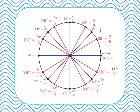Continuing in 30-degree steps: 7π/6, then 8π/6 which is 4π/3, then 9π/6 which is 3π/2, then 10π/6 which is 5π/3, then 11π/6, and finally 12π/6 which is the same as 2π. This is simply about being able to work with fractions.